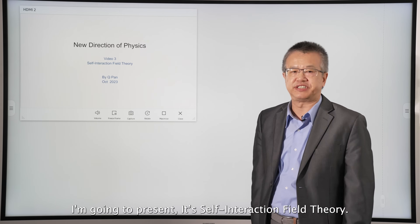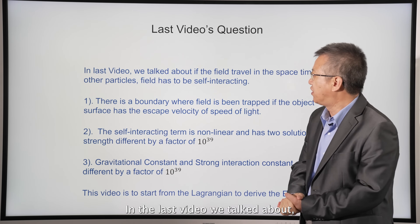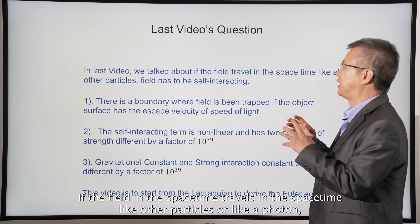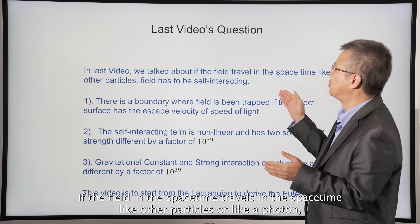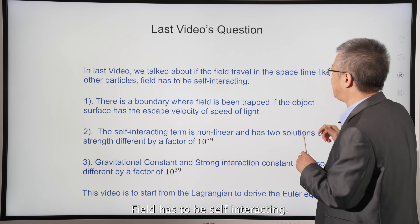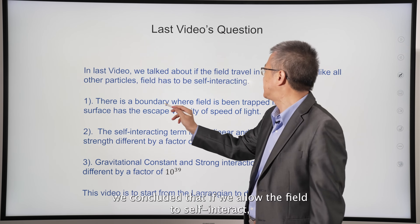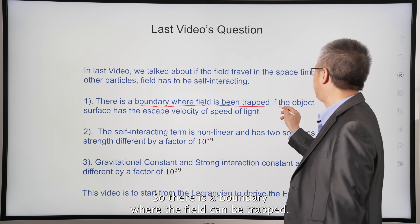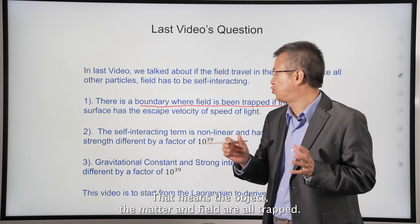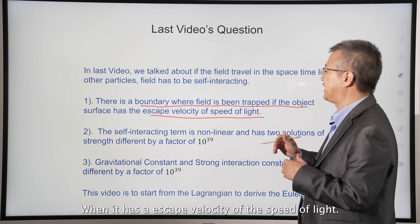It's about the theory I'm going to present: a self-interacting field theory. In the last video we talked about whether the field in spacetime travels in spacetime like all other particles or like a photon. So the field has to be self-interacting. We concluded that if we allow the field to be self-interacting, there is a boundary where the field can be trapped — meaning matter and the field are all trapped when the escape velocity equals the speed of light.